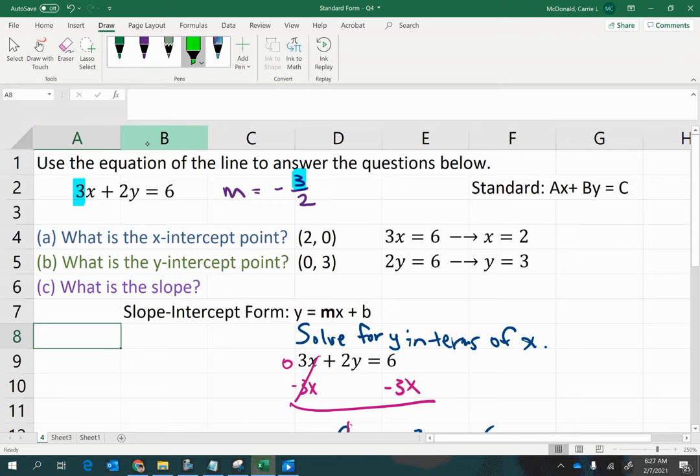And also notice that the coefficient in front of y is a positive 2. And then there is this negative out front. So that is a pattern you can use with other examples. And we're going to do one more just so you can see what it looks like if your signs are a little different.